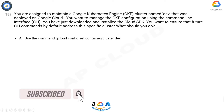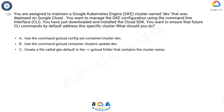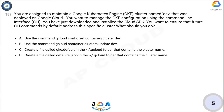A: Use the command 'gcloud config set container/cluster dev'. B: Use the command 'gcloud container clusters update dev'. C: Create a file called 'gke.default' in the /.cloud folder that contains the cluster name. D: Create a file called 'defaults.json' in the /.cloud folder that contains the cluster name. Now think for five seconds for the correct answer.